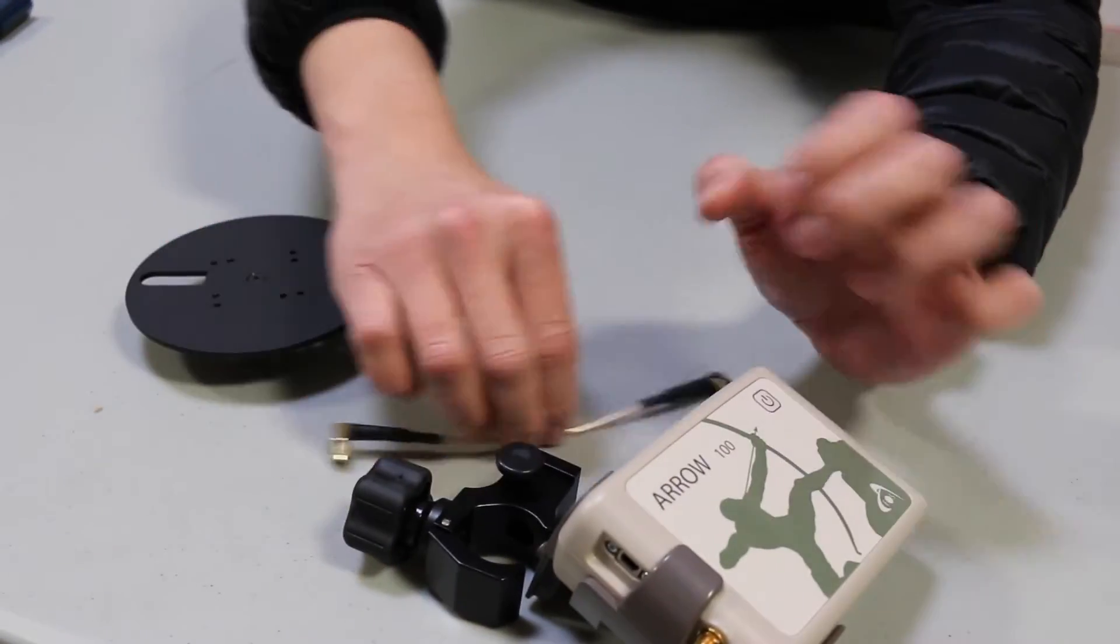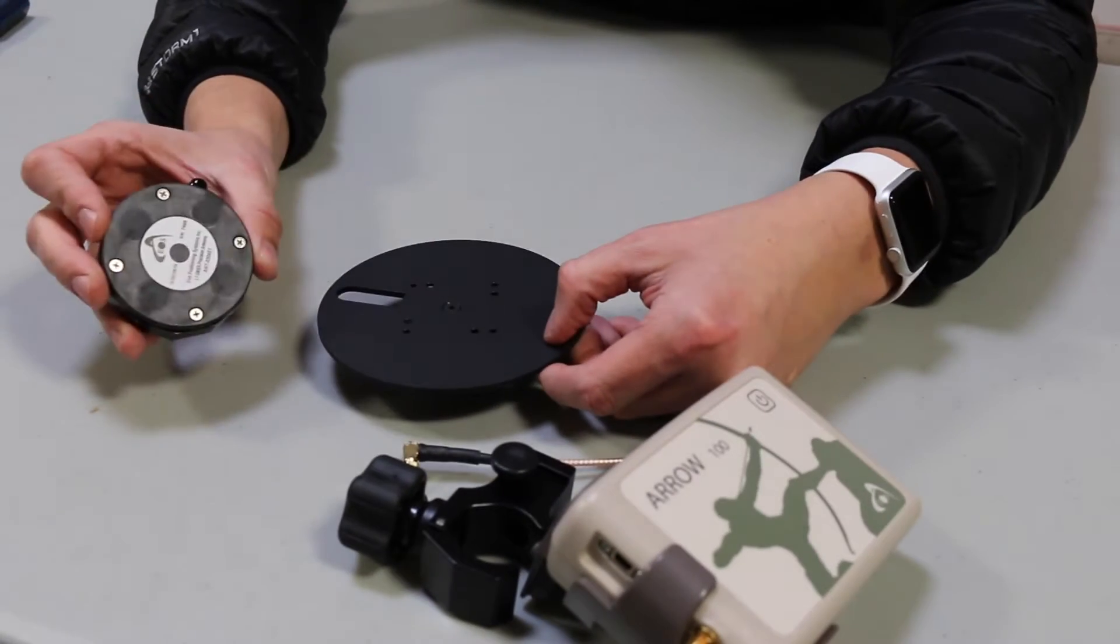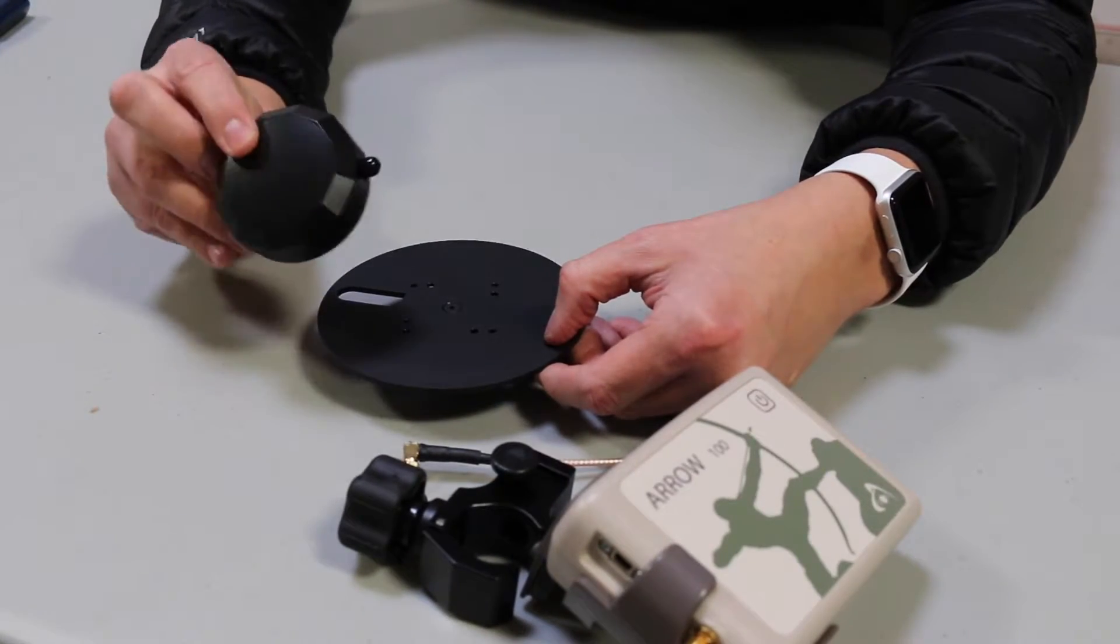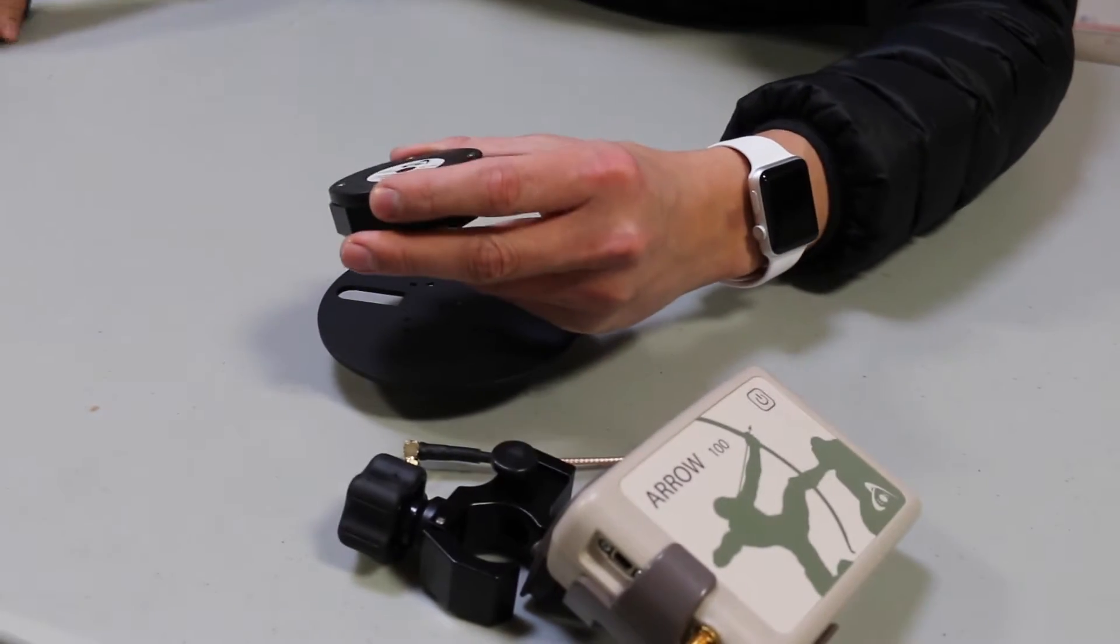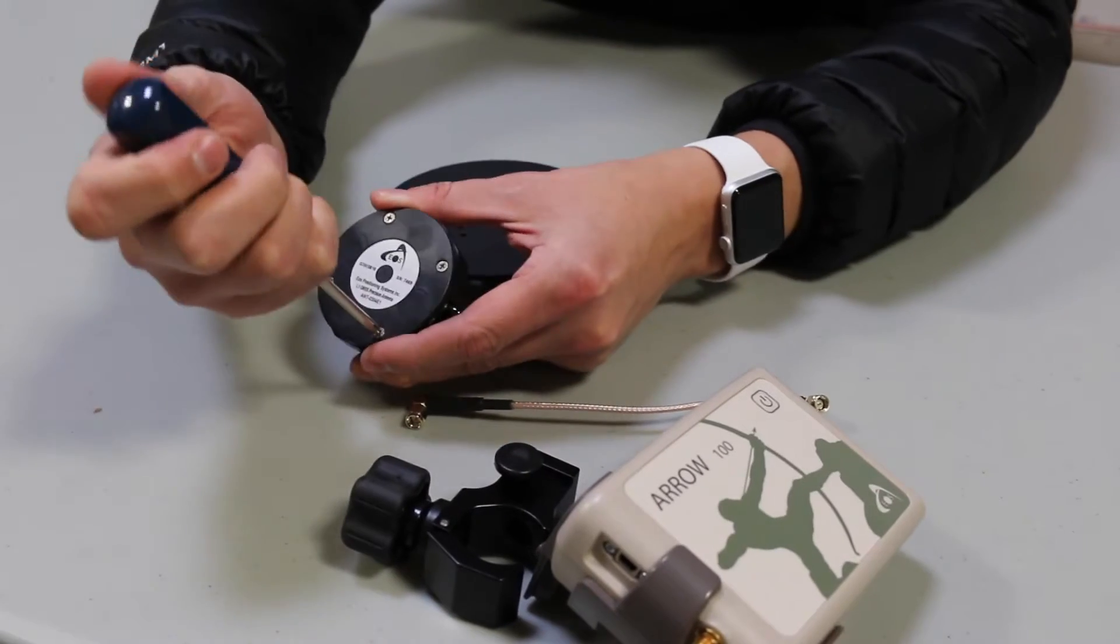The other component that we need to address is we need to take the antenna that came with our Aero 100 kit and remove the screws here.